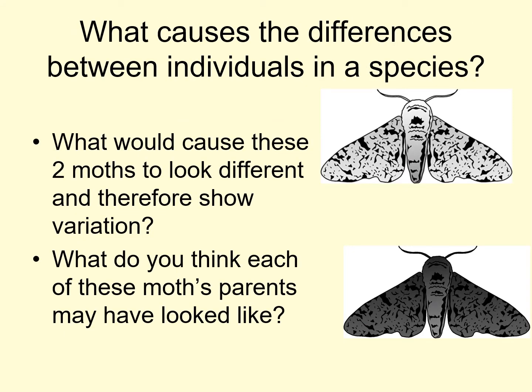We're going to look at a specific species that comes up in a lot of examples: the peppered moth. I actually thought moths were boring until learning about this story, because you can quite clearly see evidence of natural selection. Evolution is a change in a species over time, and it was Charles Darwin who first came up with the theory of natural selection. We're going to use this peppered moth story to show you what natural selection is.